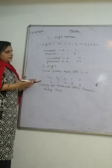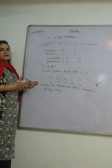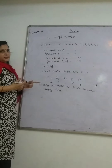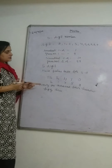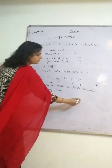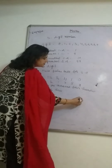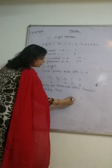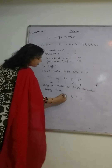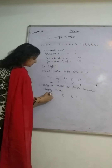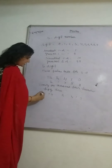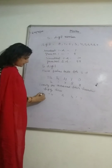Now in the same manner we can have the 6-digit number. When we talk about the 6-digit number, we have the places: 1s, 10s, 100, 1000, 10,000, and this is the lakh place.